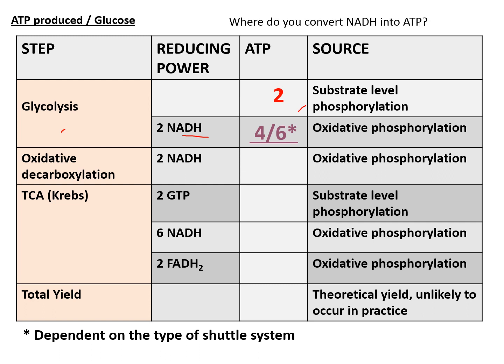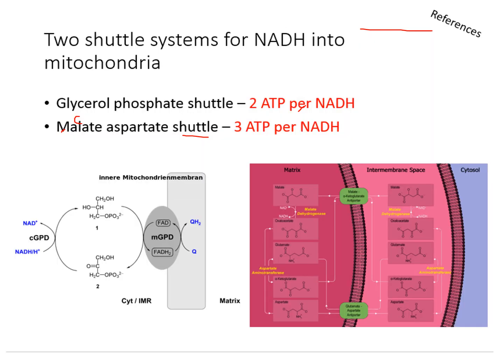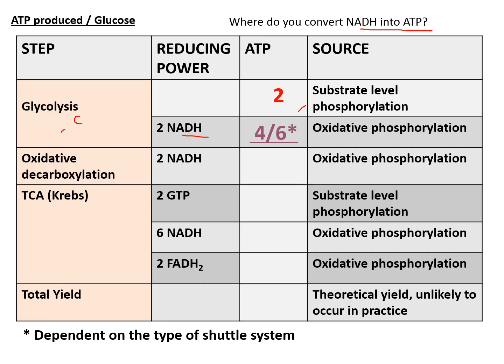The NADH from glycolysis is produced in the cytoplasm, but ATP conversion happens in the mitochondria, so the NADH must be shuttled in. If we use the glycerol phosphate shuttle, one NADH gives only two ATPs because it bypasses complex 1. If we use the malate-aspartate shuttle, it gives three ATPs per NADH molecule.